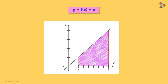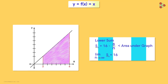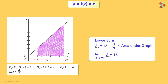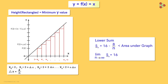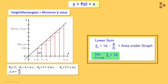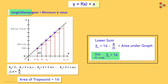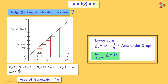Earlier, to find the area under the graph of this function, we found the lower sum — in each sub-interval we took the minimal y values as the heights of the rectangles, and we saw that as the number of sub-intervals n tends to infinity, the lower sum approaches the area under the graph. But why only consider the minimum y value? What if we take the maximum y value instead? Yes, that would also work.